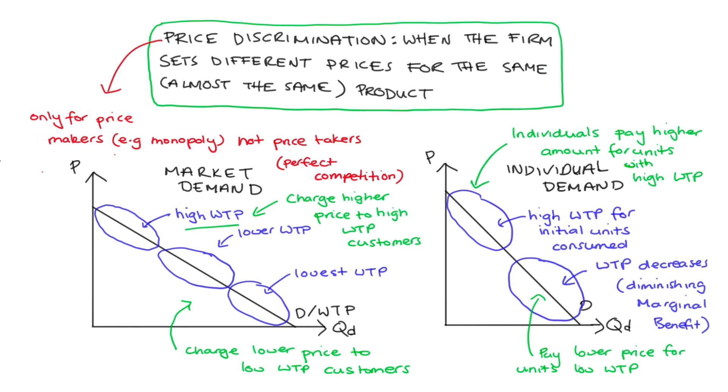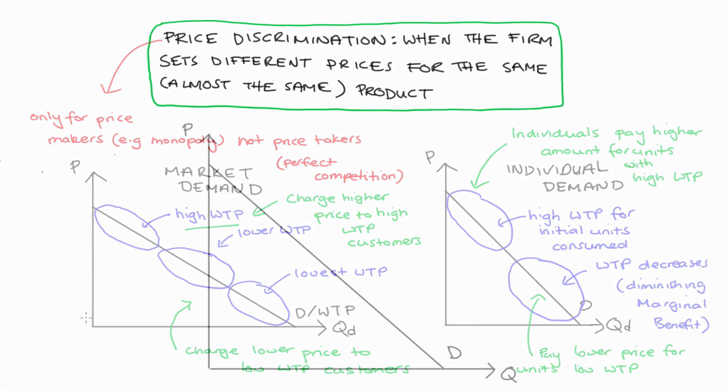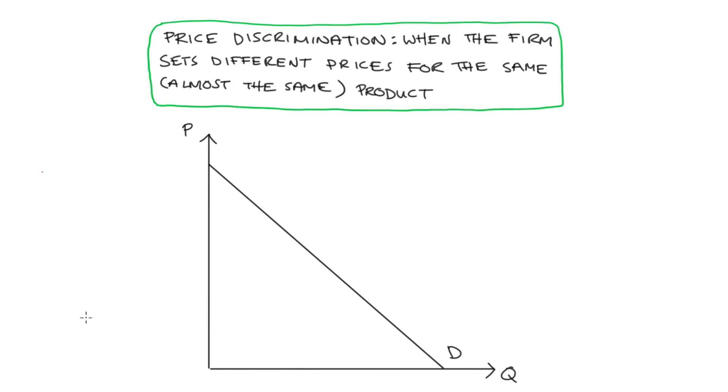And this sort of targeting of different segments of the market with different prices, if successful, is going to be better for the firm in comparison to charging only one price. So we're contrasting price discrimination to the standard single priced firm maximization situation, which we learn about in our classes. In this situation, the firm takes their downward sloping demand curve. They don't set multiple prices. They just set the quantity that they produce Q star, such that marginal revenue MR is equal to marginal cost MC, and they just charge one price P star for all of those Q star units.